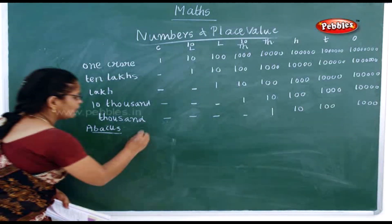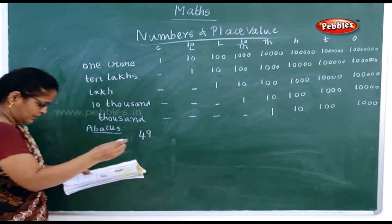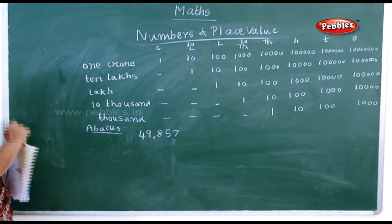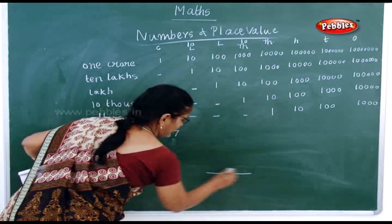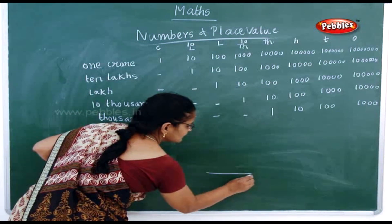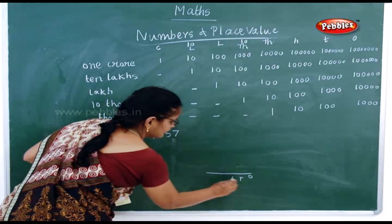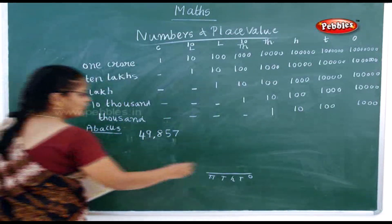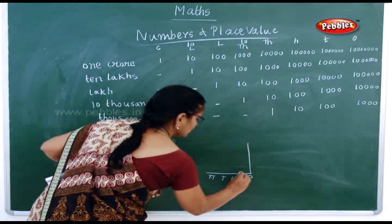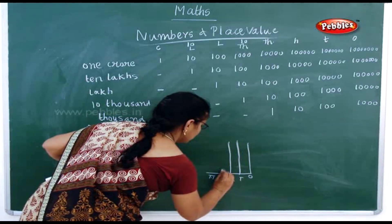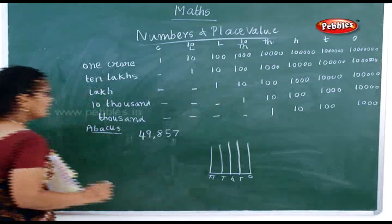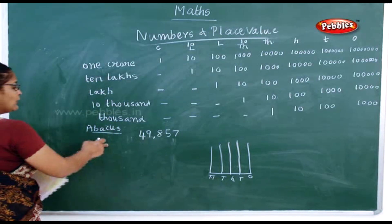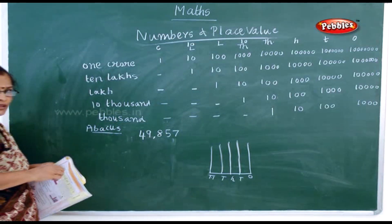Next example: 49,857. Now how will you show it on the abacus? The place values are ones, tens, hundreds, thousands, and — after thousands — ten thousands.